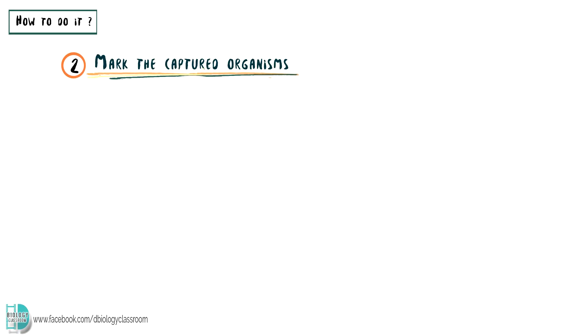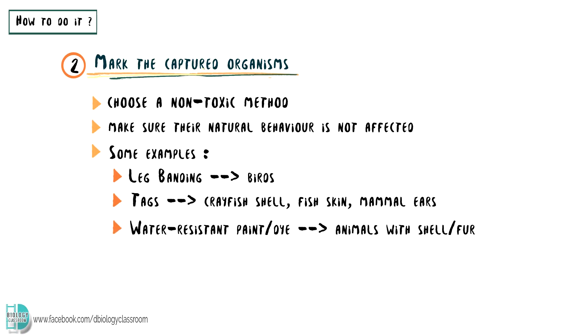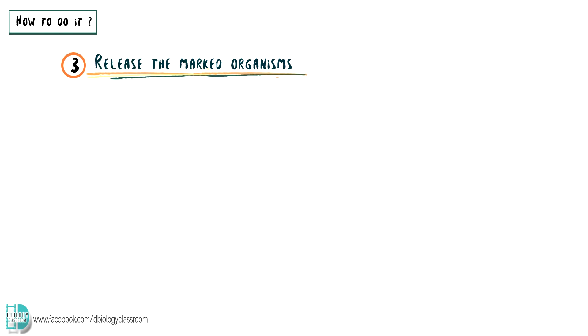Secondly, we need to mark the captured organisms using a non-toxic method which will not affect their natural behavior. For example, leg banding can be used for birds. Tags can be used on crayfish shells, fish skin, or mammal ears. Water-resistant paint or dye can mark those animals with shells or fur. The marked individuals are then released back to their natural habitat, and the number of marked organisms is recorded.